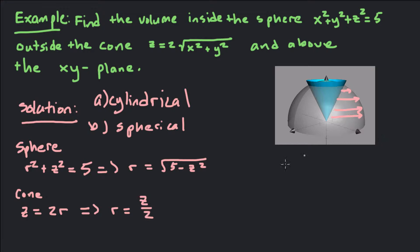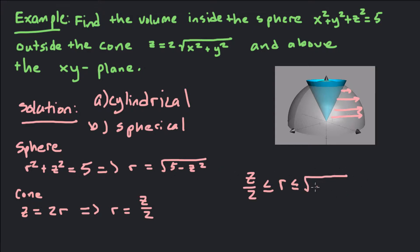So the inner bound for r is the cone, meaning r goes from z over 2 out to the sphere — the hemisphere — at square root of 5 minus z squared. That's the outer bound for r.